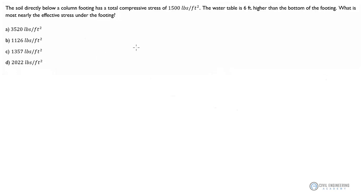Hey there engineers, welcome to Civil Engineering Academy. Once again we're looking at a problem from geotechnical engineering. This one's dealing with effective stress and it reads like this: the soil directly below a column footing has a total compressive stress of 1,500 pounds per foot squared. The water table is six foot higher than the bottom of the footing. What is most nearly the effective stress under the footing?